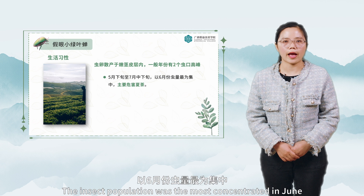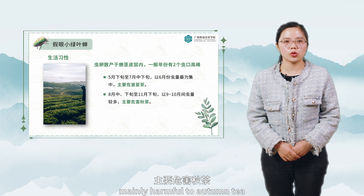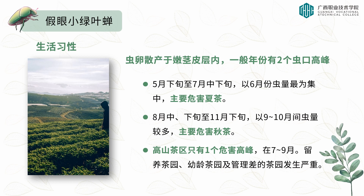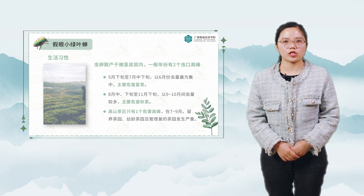The second peak is from mid-to-late August to late November, with the population most concentrated from September to October, mainly harmful to autumn tea. In alpine tea areas there is only one harm peak. Damage in tea gardens that are left behind, young tea gardens, and poorly managed tea gardens occurs most seriously from July to September.